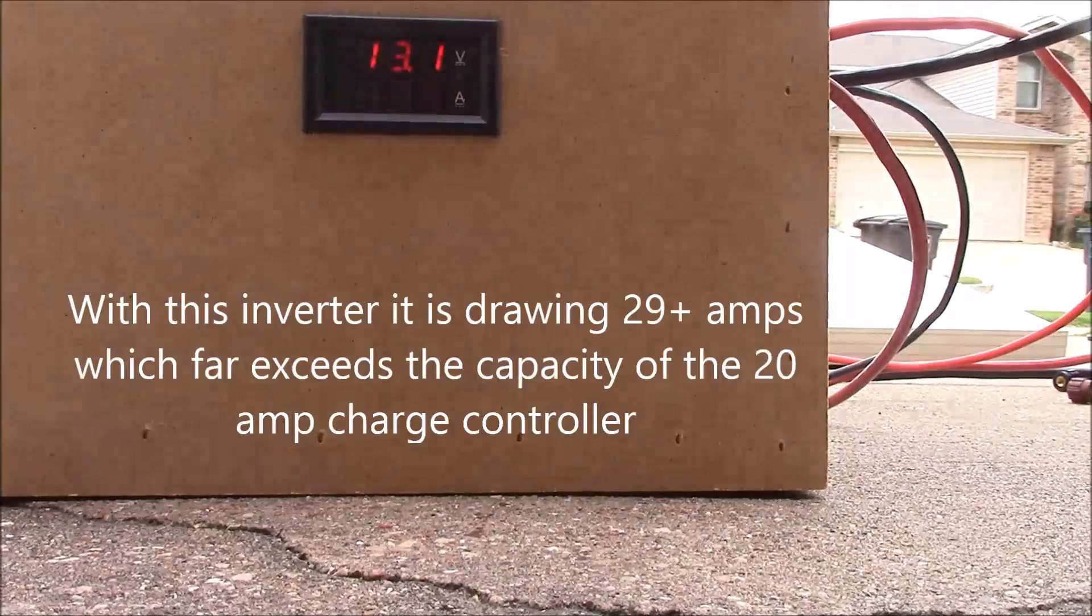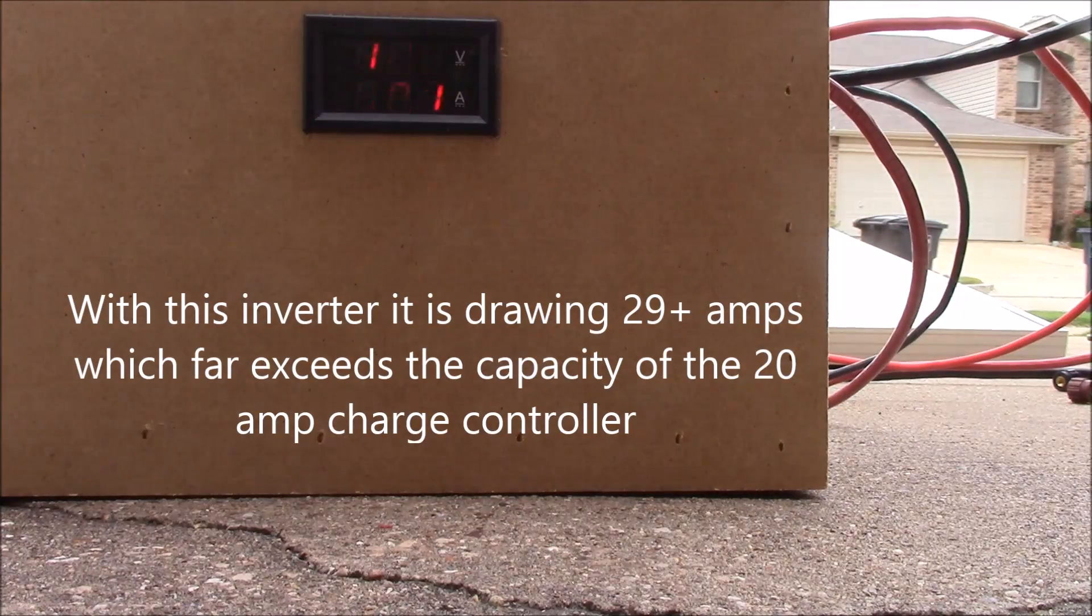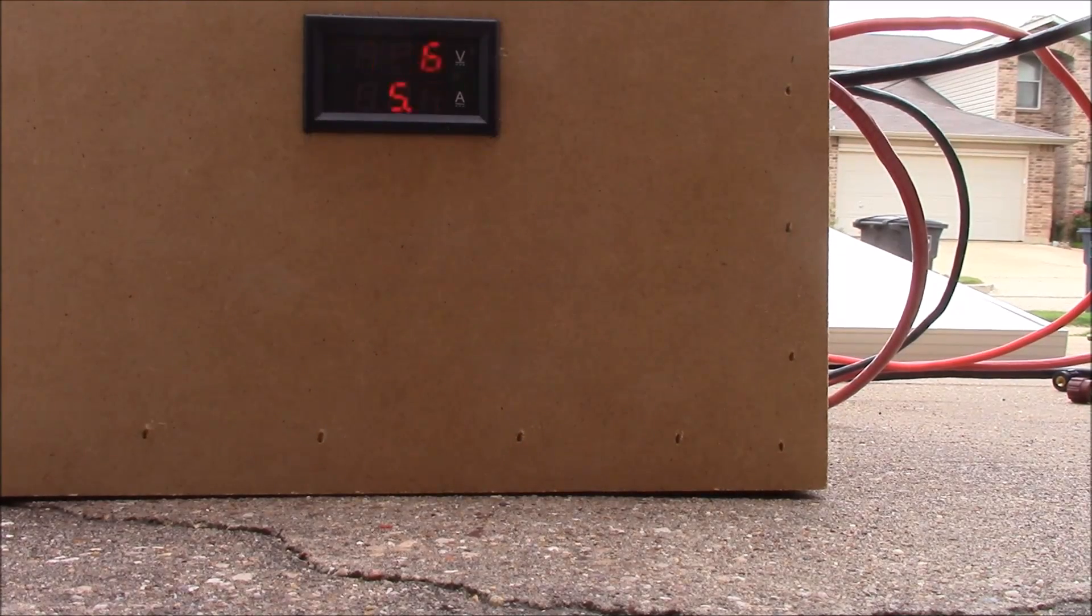So as you can see, it's spiking up to 29 amps, which is way too much for the charge controller to handle. The charge controller is only a 20 amp charge controller, so I think that's our limiting factor at this point.